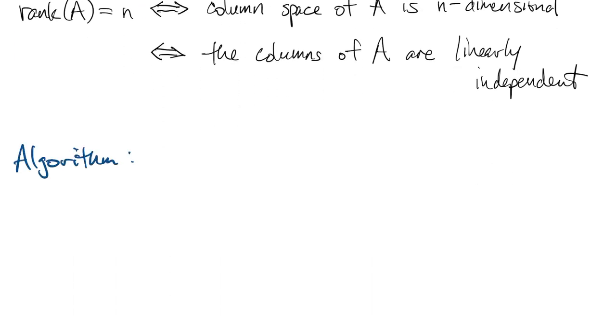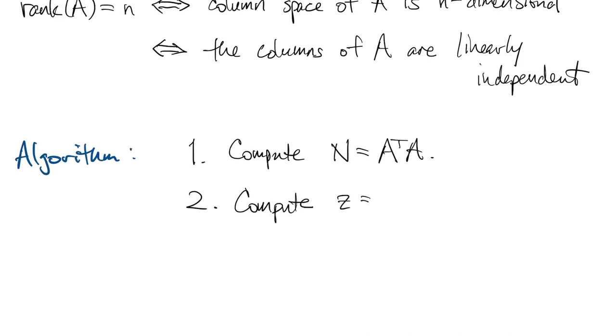So now we're ready to talk about an algorithm from the normal equations. So first you compute this matrix A transpose A. Then you compute the right hand side A transpose B. And then you solve that n by n linear system using Cholesky factorization since the matrix is symmetric positive definite.